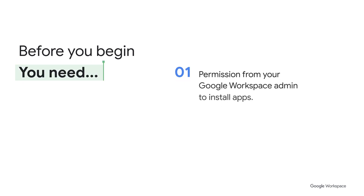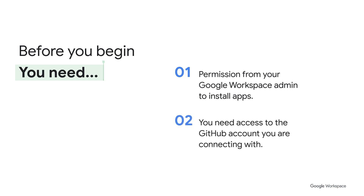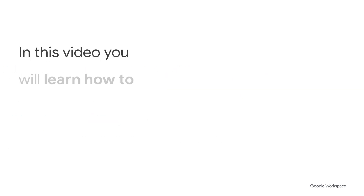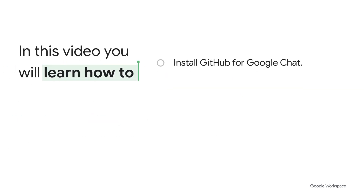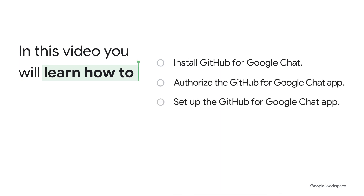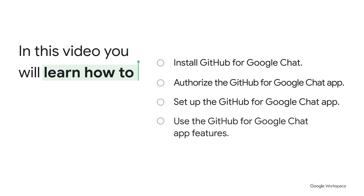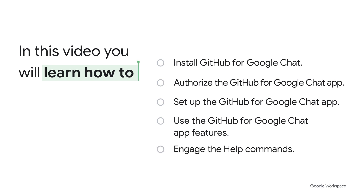Before you begin, here are some of the things you'll need to get started. You'll need permission from your Google Workspace administrator to install chat apps. You'll also need access to the GitHub account you'll be connecting with. In this quick video, you'll learn how to install the GitHub for Google Chat app, how to authorize and set up the app to use it, how to use some of its key features, and finally, how to use its help feature to learn even more about what the app can do.